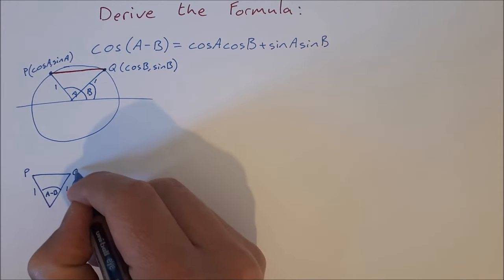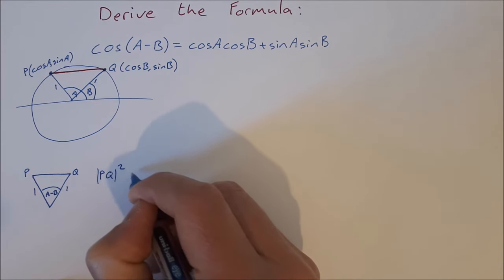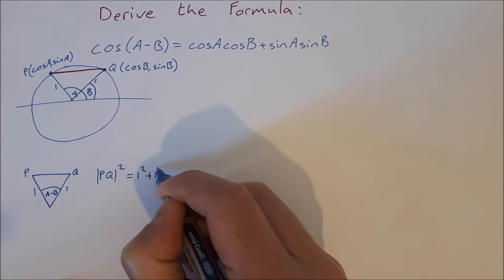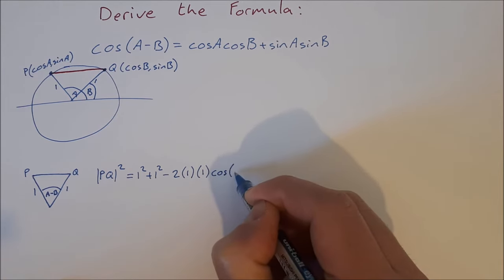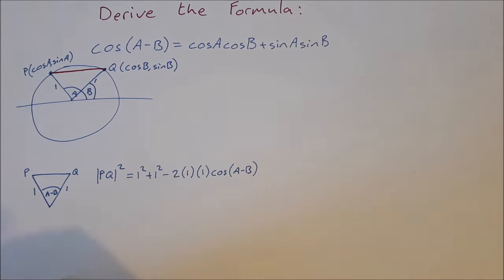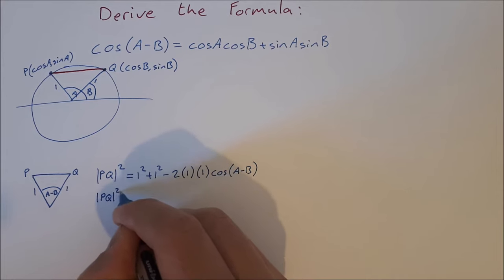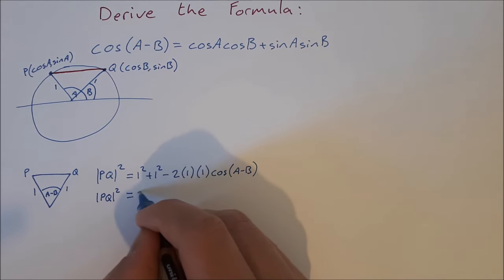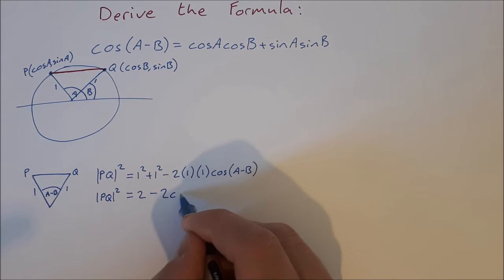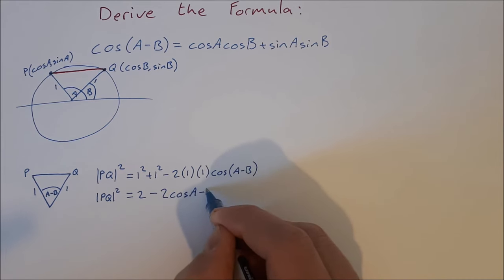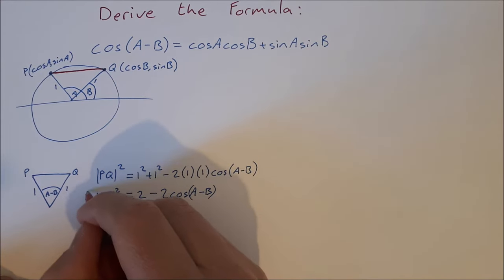Using the cosine rule: PQ² = 1² + 1² - 2(1)(1)cos(a - b). Simplifying: PQ² = 2 - 2cos(a - b). I'll note this as Equation 1.